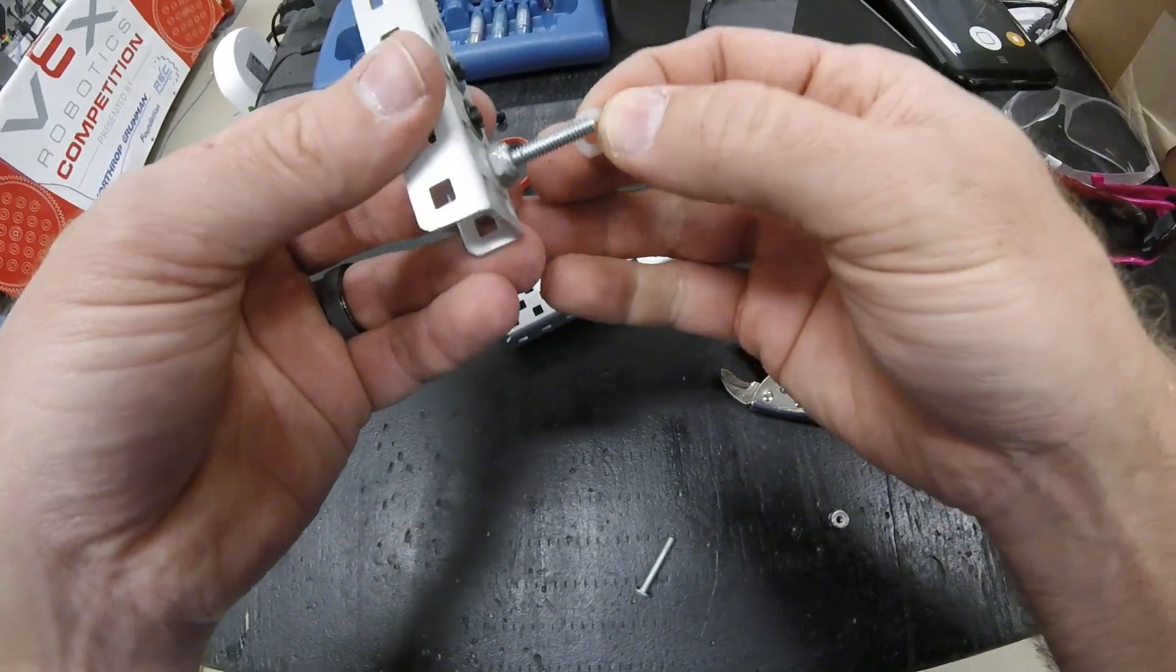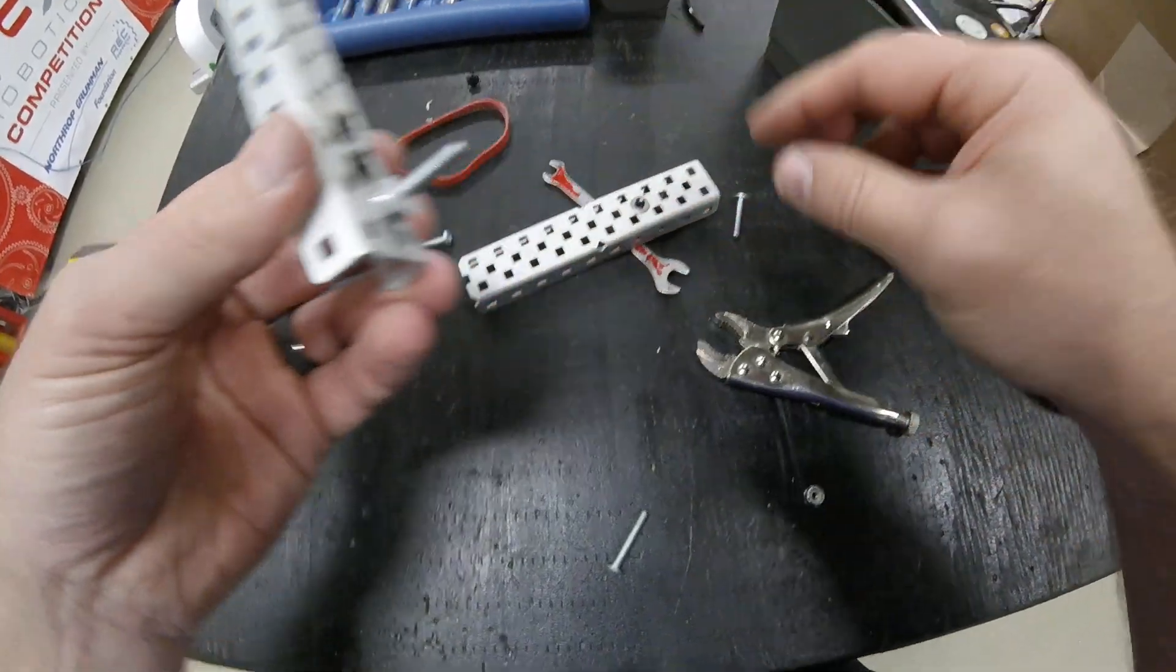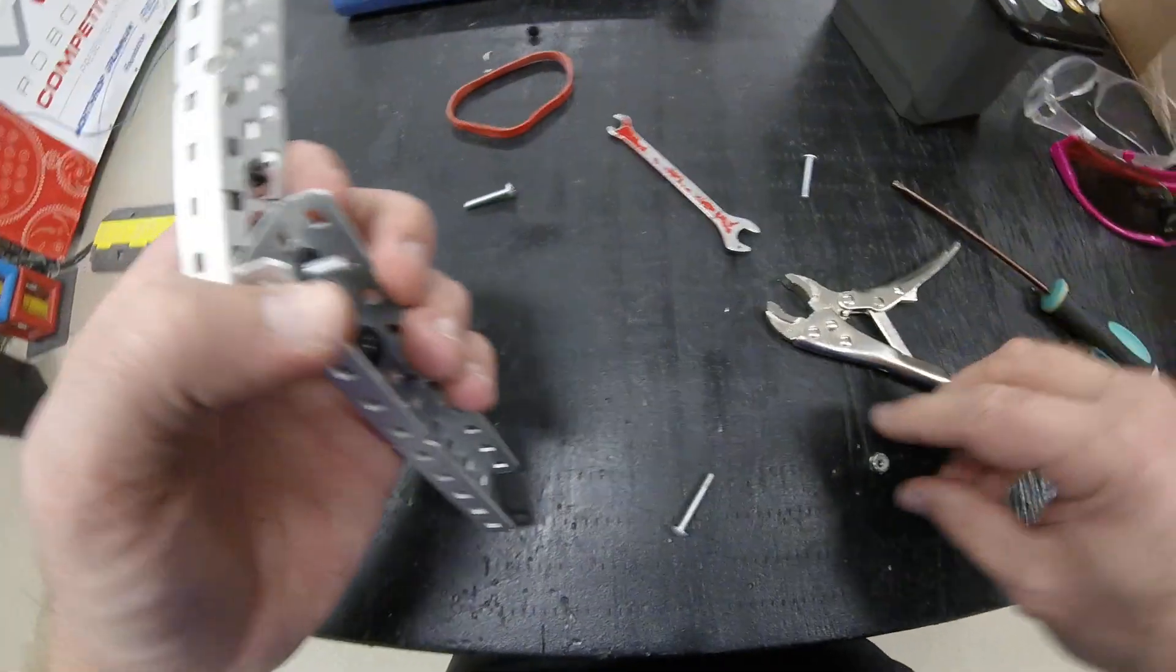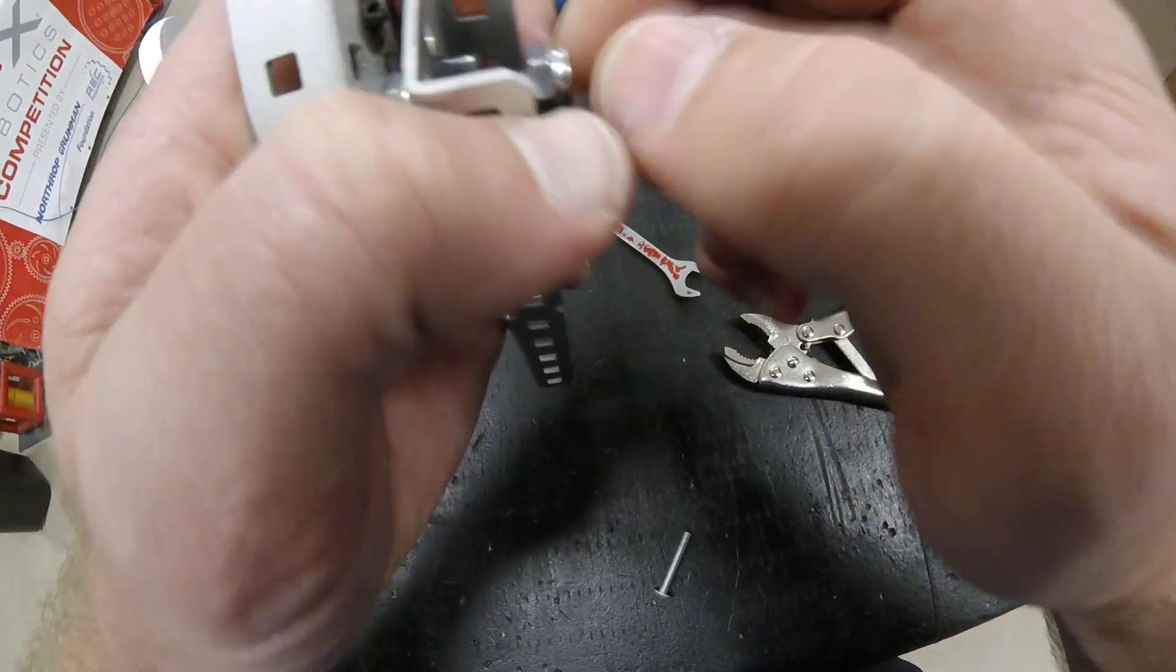So you do this, then you take your teflon washer on the other side, place these together, then we want to tighten the nut on the back side.